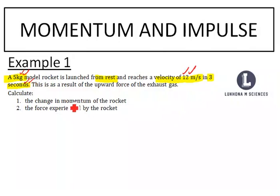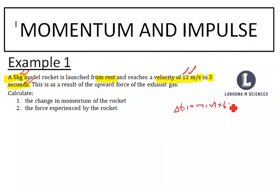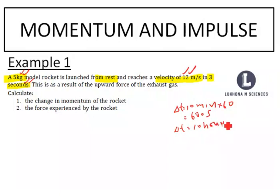If you are given time in minutes — say 10 minutes — you multiply by 60 to get 600 seconds. If you are given time in hours — say 10 hours — you multiply by 60 and then another 60, giving you 36,000 seconds.